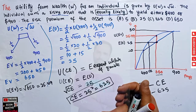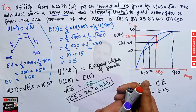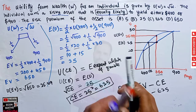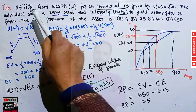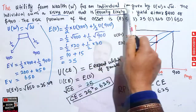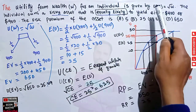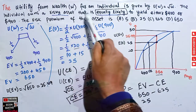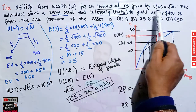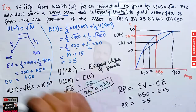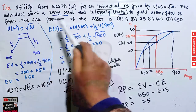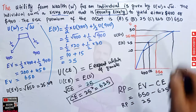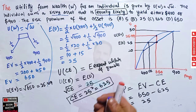In this video we will try to solve a problem that was asked in the IIT JM economics paper of 2021, regarding choice under uncertainty. The question is: the utility from wealth for an individual is given by u(w) = √w. The individual owns a risky asset that is equally likely to yield either 400 or 900 dollars. The risk premium of the asset is — the options are 525, 625, or 650. So we need to find out the risk premium.